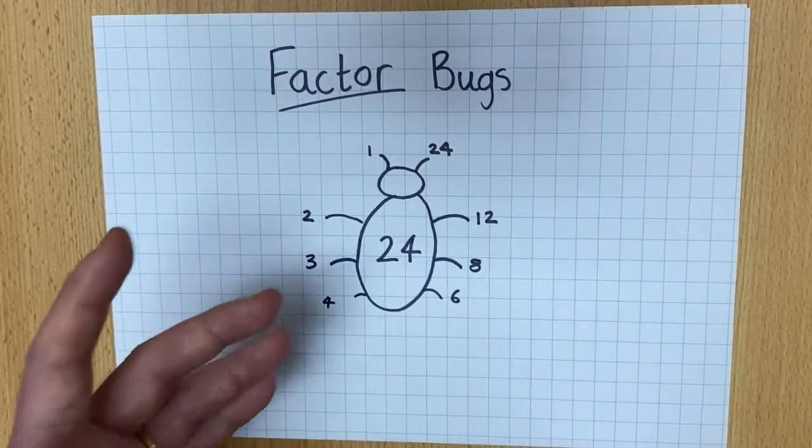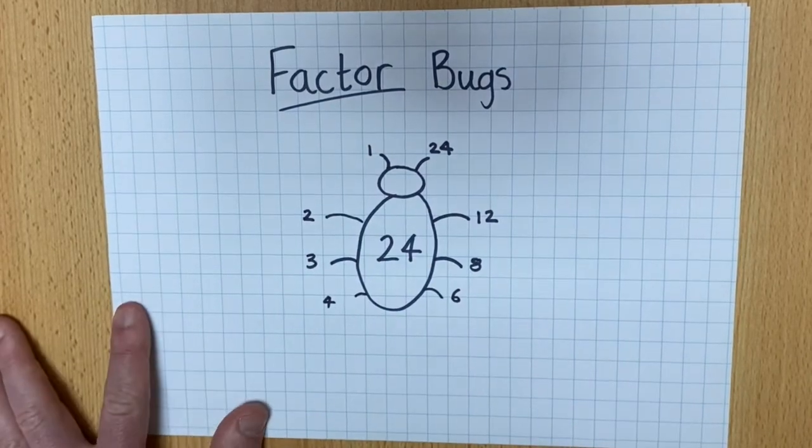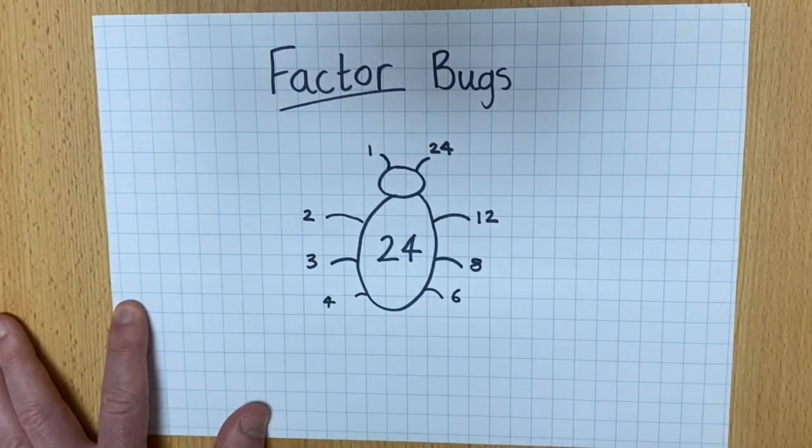OK, and then maybe more, but you can get the idea now. This is how you make a factor bug.